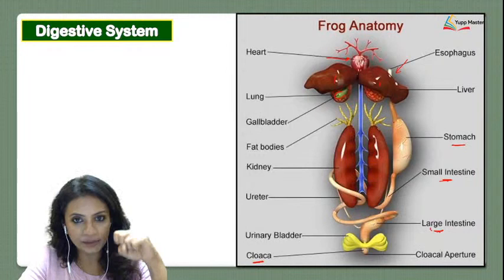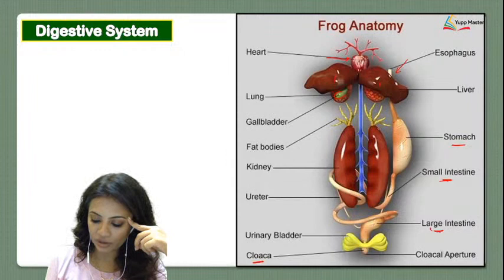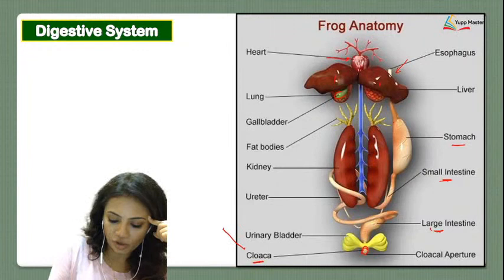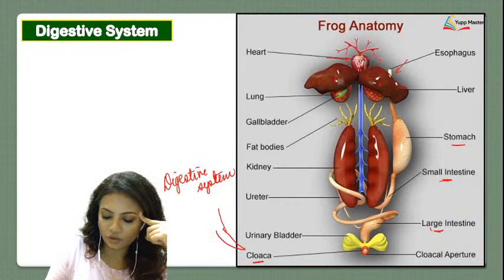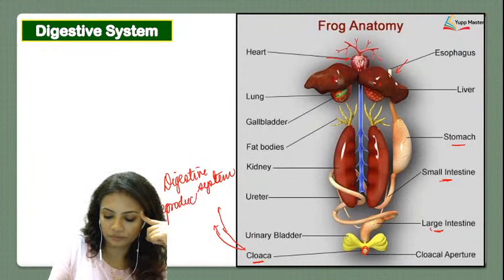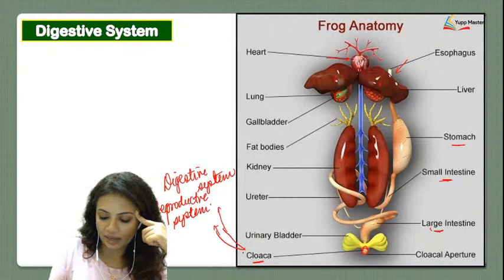The cloaca is an aperture in the frog that serves as a common opening for three different systems: the digestive system, the reproductive system, and the excretory system.